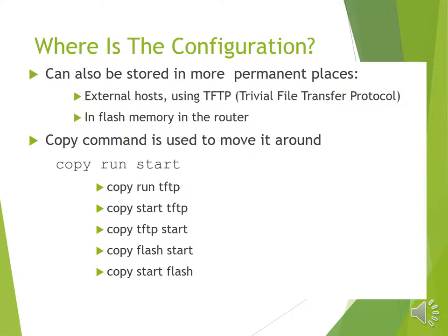Configuration can also be stored in more permanent places, like external hosts using Trivial File Transfer Protocol, and in flash memory in the router. The copy command is used to move configurations around. Common commands include: 'copy run start', 'copy run tftp', 'copy start tftp', 'copy tftp start', 'copy flash', 'copy start flash' — to move startup and running configurations to and from a TFTP server and to and from flash memory.